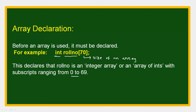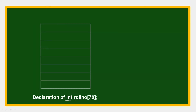roll_number[0] refers to the first element. roll_number[1] refers to the second element. So the last element's index is 69. Here roll_number is the name of the array and 70 is the size of the array.